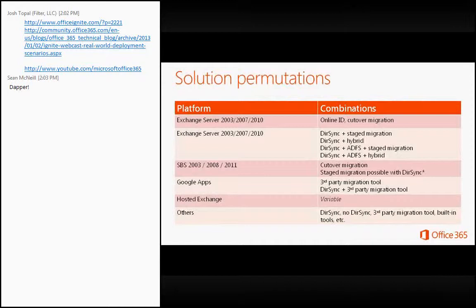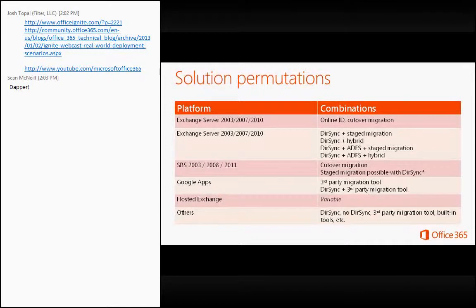There is really no one-size-fits-all. What the customer is trying to achieve by moving to Office 365 is what gives us the deployment approach. Some customers with Exchange Server 2003 or Small Business Server 2003 simply want to move completely to the cloud and do a cutover migration — one way, no looking back. Other organizations with Exchange 2003, 2007, and 2010 might use any permutation of DirSync plus staged migration, hybrid migration, or ADFS for single sign-on.